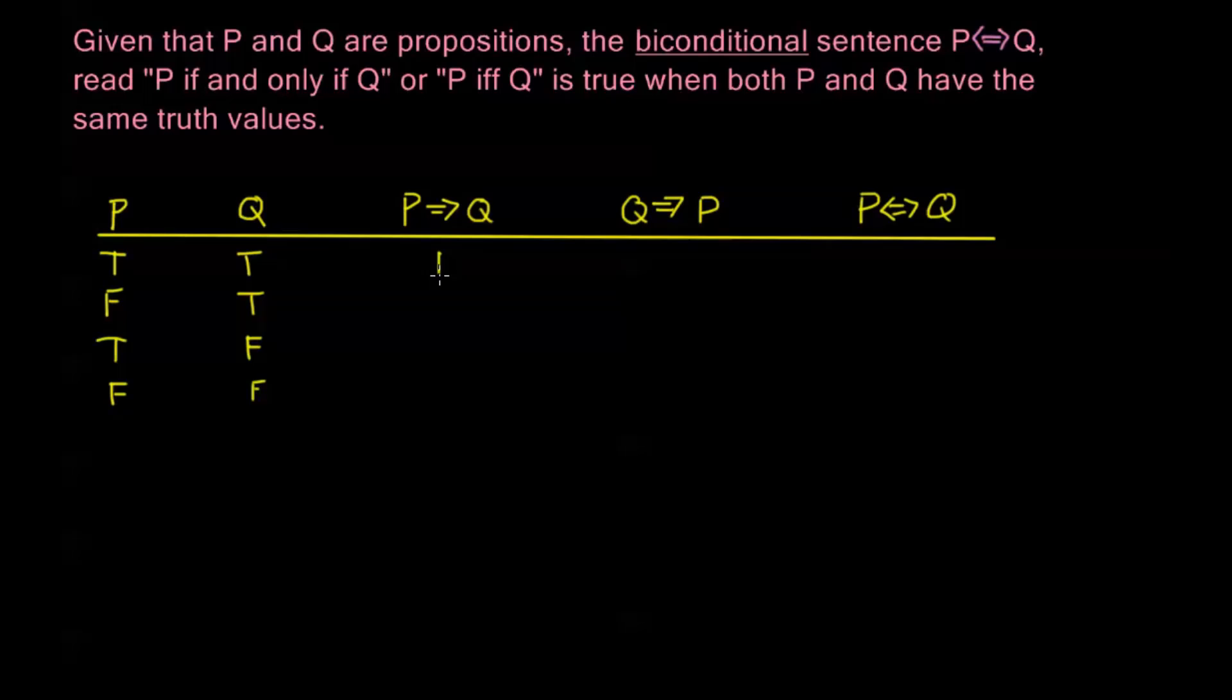P implies Q is true when Q is true or when P is false, and it's false only when P is true and Q is false. Q implies P means Q is false or P is true. Then P biconditional with Q is when P and Q are both true or when they're both false. In rows two and three, P and Q are different from each other, so the biconditional statement is false. It's true if they're both true or they're both false.